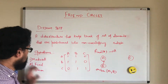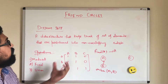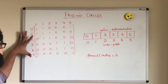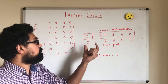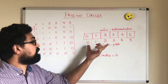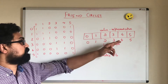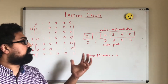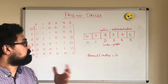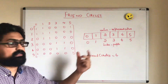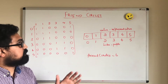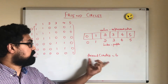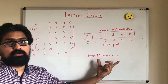Now let's take our first example and use these operations to find the total number of friend circles. This is the same example we saw earlier, but instead of letters we are using numbers to denote people. We are also using a 1D array where the indexes denote people and the values denote their representatives. Initially, since every person is a representative of himself, we initialize values to be the same as indexes. Since every person is in his own group initially, we initialize the total friend circles to be equal to the number of people, which is 6.